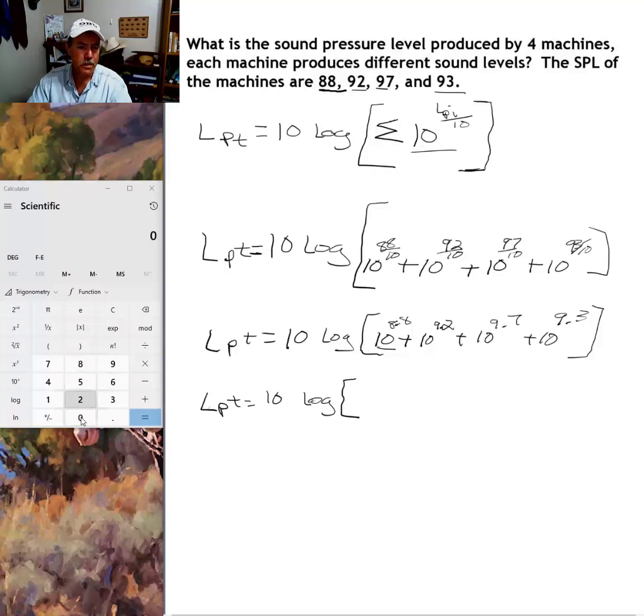All right, first thing we want to do is enter 10, then X to the Y, this key here, X to the Y, then enter 8.8. That's that 10 to the 8.8 that you see in your calculator, that's his first term.